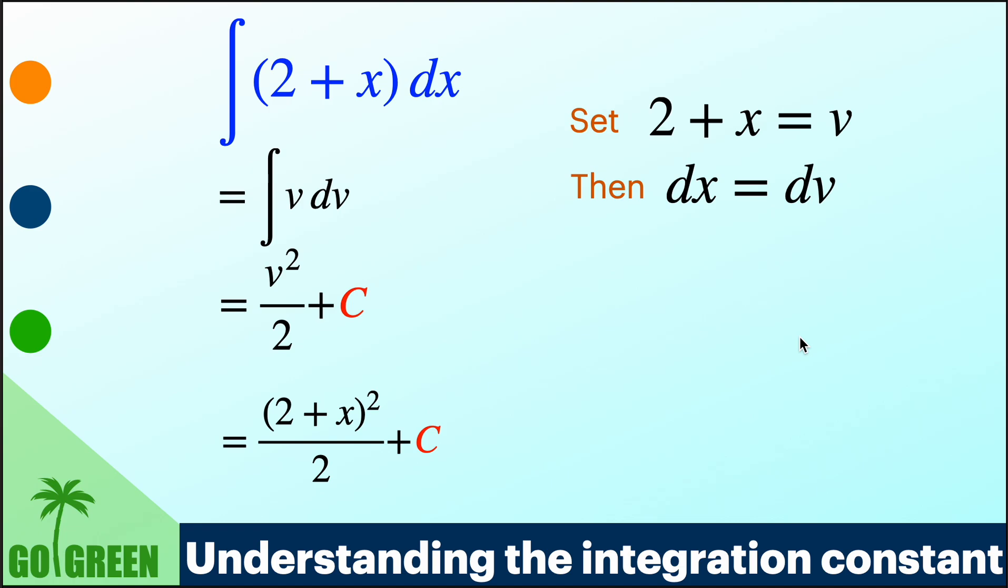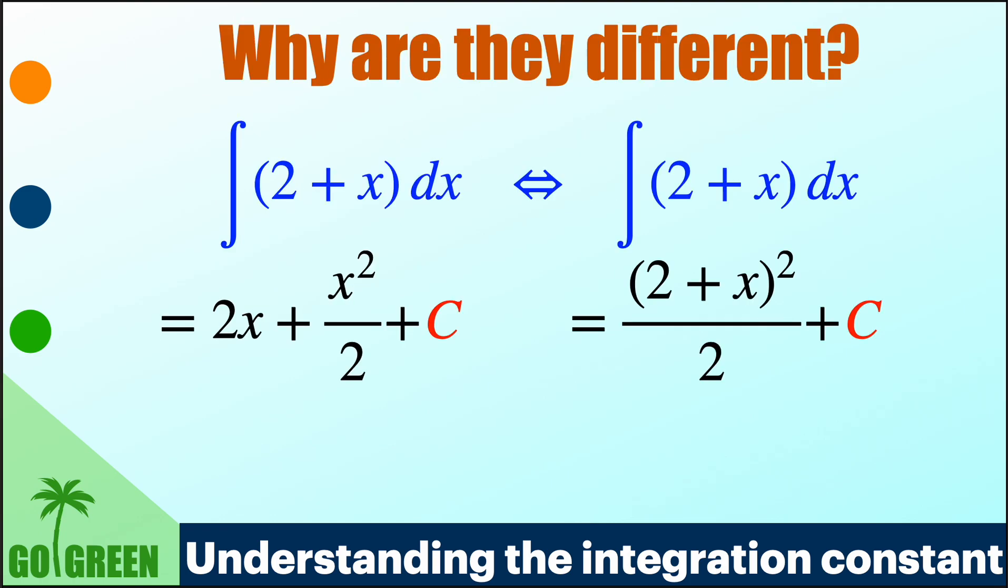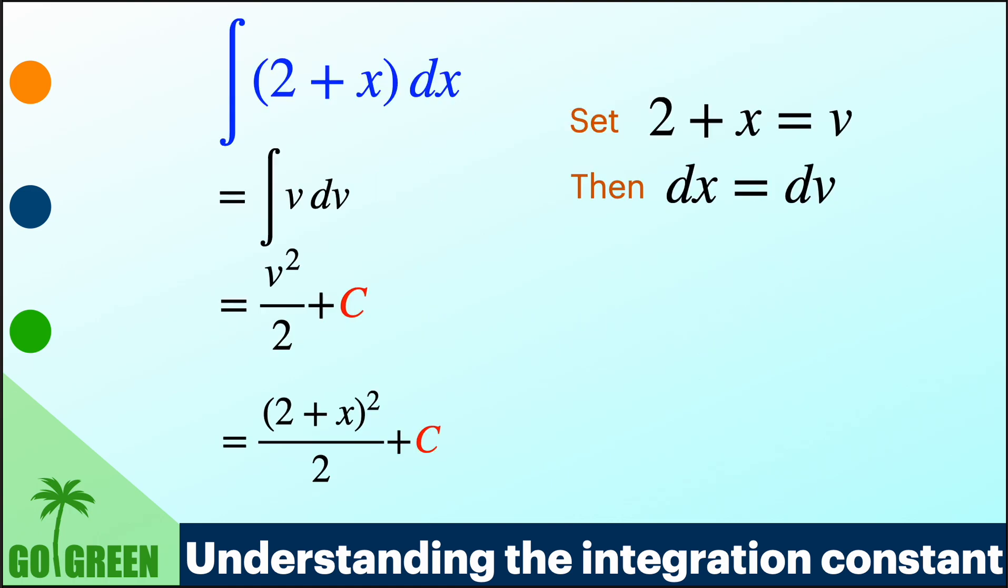Replace v back: 2 plus x squared by 2 plus C. So earlier it was 2x plus x squared by 2 plus C, and now it is 2 plus x whole squared by 2. So indeed we get these solutions.